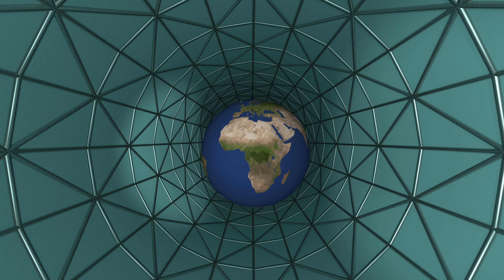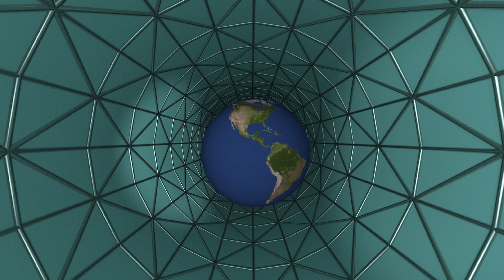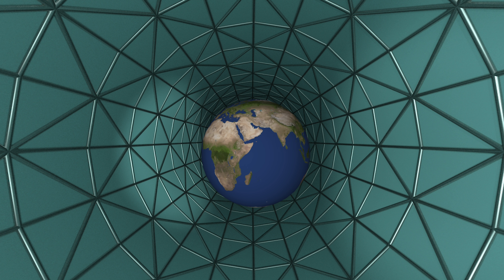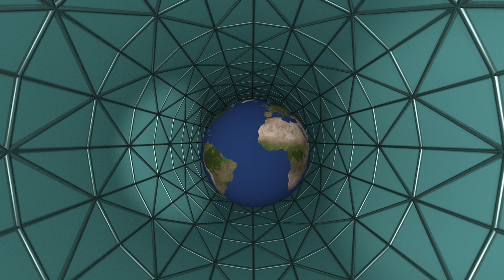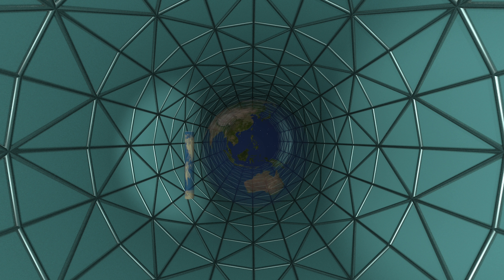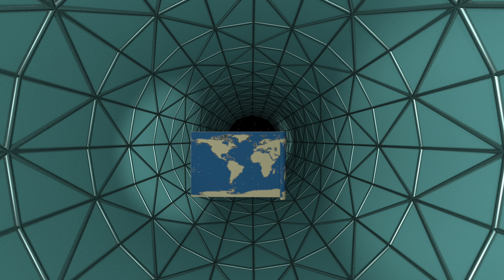When people began exploring the Earth, they wanted to create a map of what they found. But how can you take the surface of the Earth, which is curved, and draw it faithfully on a flat piece of paper? You can't. Whenever you create a flat map of the Earth, there will always be parts that are stretched and distorted. For example, in this map of the Earth, Greenland looks huge — similar in size to South America. But in reality, South America is more than eight times larger than Greenland. Also, Africa is more than two times as large as Antarctica, but you would never know it from this map.